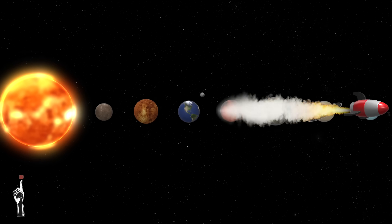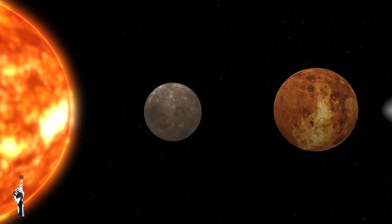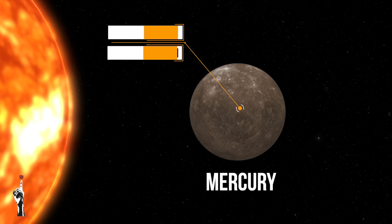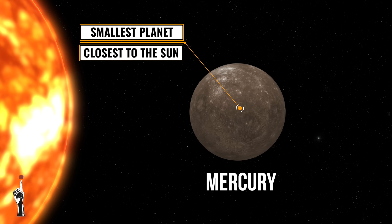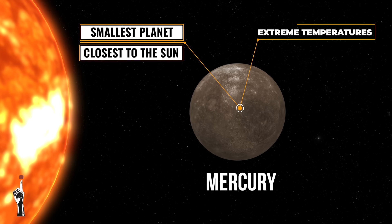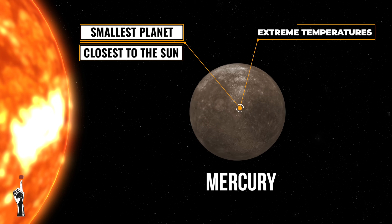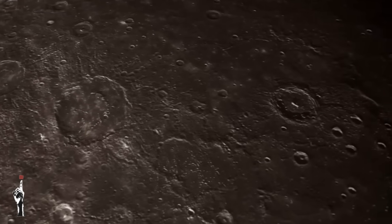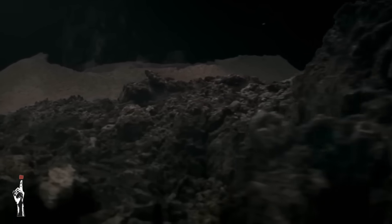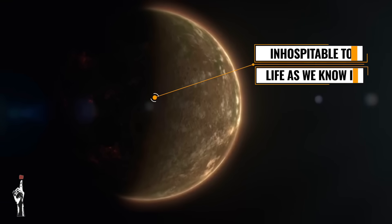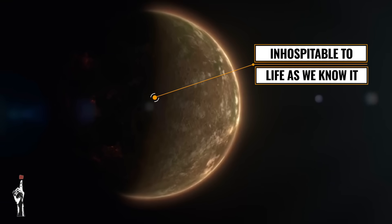First up, we visit Mercury — the planet closest to the Sun and the smallest planet in the solar system. Because of its proximity to the Sun, it experiences extreme temperatures: boiling hot during the day and freezing cold at night. It is a small, rocky planet with a surface covered in craters, much like our Moon. Mercury has no atmosphere to trap heat, making it one of the most unfriendly environments for life.